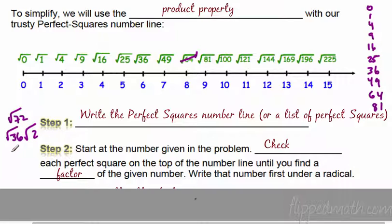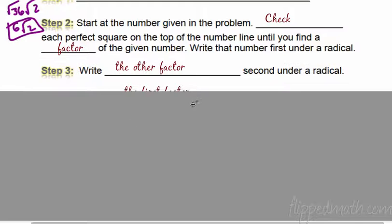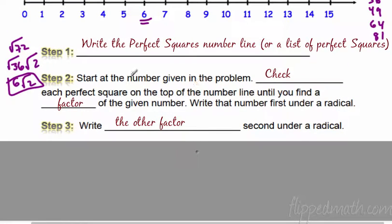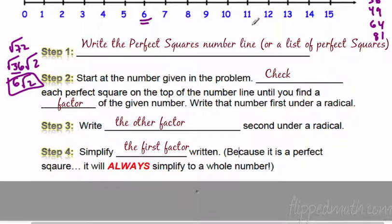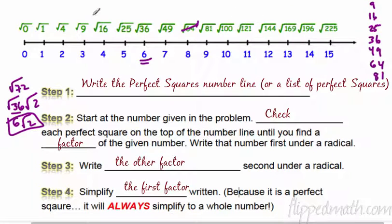Because I found 36, that number will simplify — it's on the number line, so 36 simplifies to whole number 6. The square root of 2 hangs out and stays. We're done! Step 3: write the other factor second under the radical — so 36 times 2, write that second under a radical. Then simplify the first one. The first one should always simplify because you found it on the number line. All these numbers simplify perfectly, so your first factor will always simplify if you write it that way.